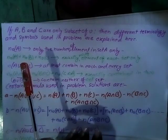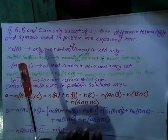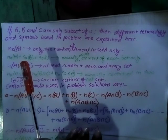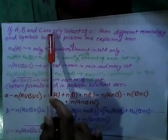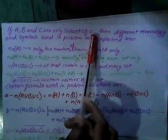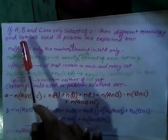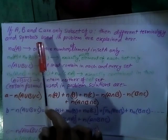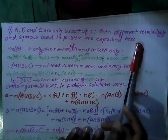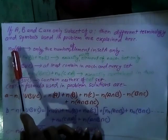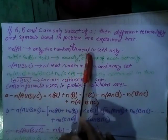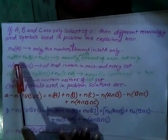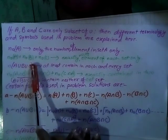In this next topic on sets, I am going to explain three sets A, B, and C as subsets of U. Different terminology and symbols used in problems are explained here. N(A) explains the number of elements in set A only.